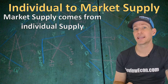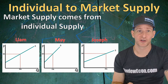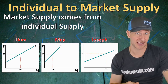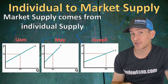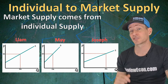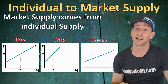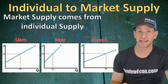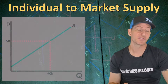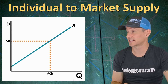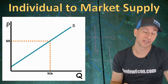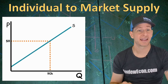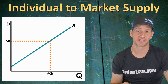Most of the time when you see supply, it will be graphed as an upward sloping curve with quantity on the x-axis and price on the y-axis, labeled S for supply. When you add up the supply curves for Liam, May, and Joseph, it gives us a market supply curve that is again upward sloping. We see that in the market at $8 a bushel, we will have 90,000 bushels of wheat produced.